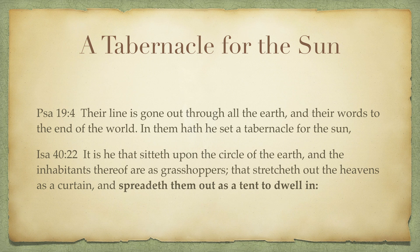The firmament is also described as a tabernacle, a tent, a curtain, or an arch. Psalm 19:1 says 'the heavens declare the glory of God and the firmament shows his handiwork,' and verse 4 says 'in them has he set a tabernacle for the sun.' Isaiah 40:22: 'It is he that sits upon the circle of the earth, and the inhabitants thereof are as grasshoppers, that stretches out the heavens as a curtain and spreads them out as a tent to dwell in.'